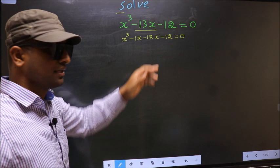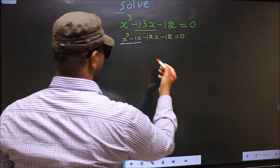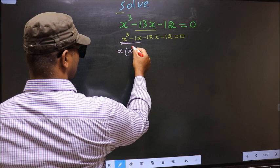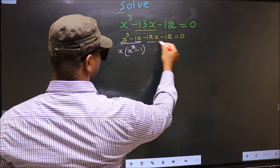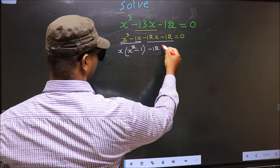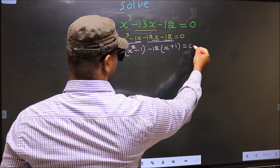From the first two terms, what can be taken out common is x. So you get x times (x minus 1). From the next two terms, what can be taken out common is minus 12. So you get minus 12 times (x plus 1) equal to 0.